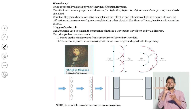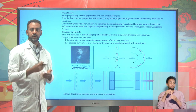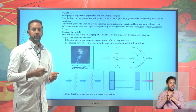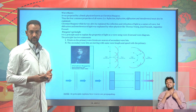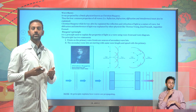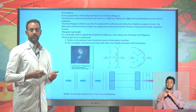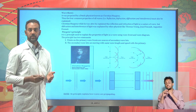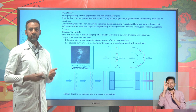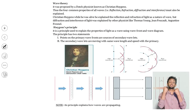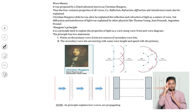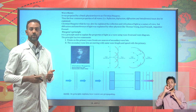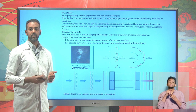Wave theory was proposed by Dutch physicist Christian Huygens. He proposed that the nature of light — reflection, refraction, diffraction, and interference — is due to its wave nature. While he was alive, he focused on reflection and refraction. Diffraction, interference, and so on were later proposed by wave theory supporters like Thomas Young, Augustin Fresnel, and others. Huygens proposed a principle — Huygens' principle — which is very important to explain how light propagates and to prove the laws of reflection and refraction.